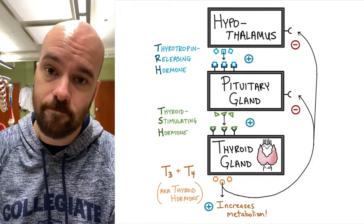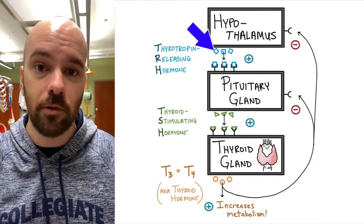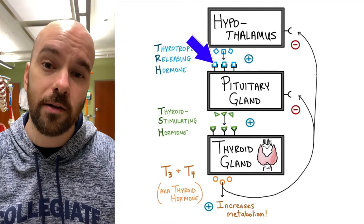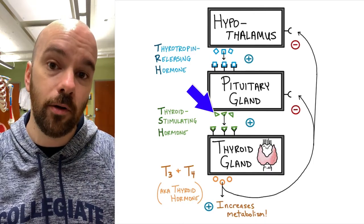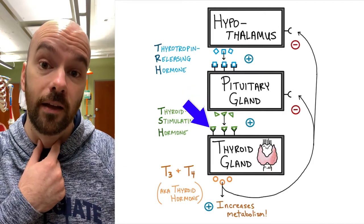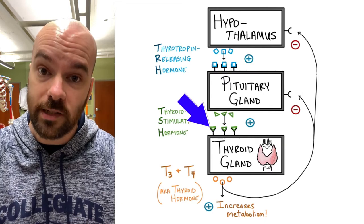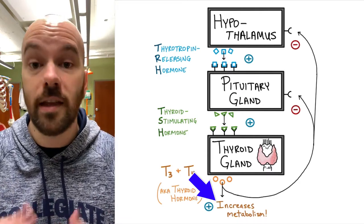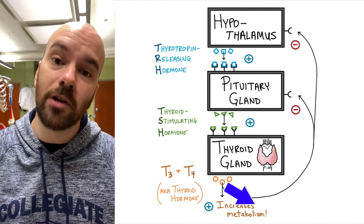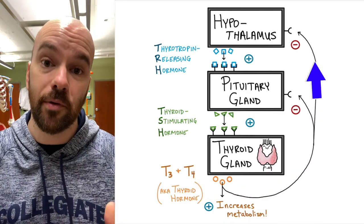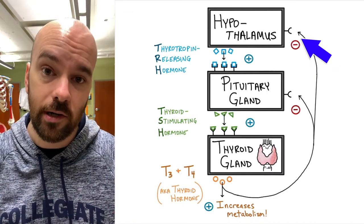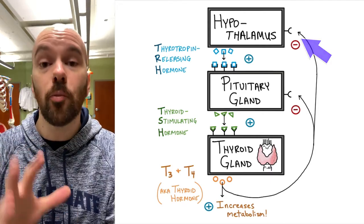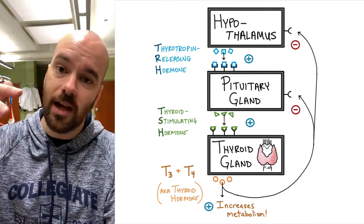To recap: the hypothalamus releases thyrotropin releasing hormone, which travels to the pituitary gland and stimulates it to release TSH, or thyroid stimulating hormone. TSH travels through the bloodstream to the thyroid gland, causing it to grow slightly over time and to release T3 and T4 to increase metabolism. T3 and T4 also travel back to the hypothalamus and pituitary, binding receptors there to inhibit those glands, bringing TRH, TSH, and T3/T4 levels back down. This negative feedback loop regulates our metabolism, keeping it from going too high or too low.